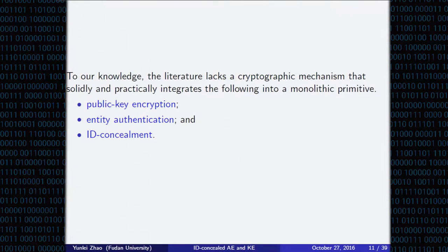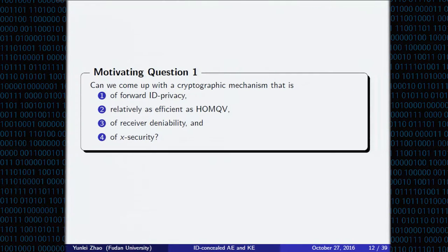About 40 years have passed since the introduction of Diffie-Hellman. To our knowledge, the literature still lacks a cryptographic mechanism that could solidly and practically integrate the following into a monolithic primitive simultaneously: public-key encryption and entity authentication, digital signature, and identity concealment. Our further motivating question is: can we come up with a cryptographic mechanism that enjoys forward ID privacy and is relatively as efficient as HMQV?